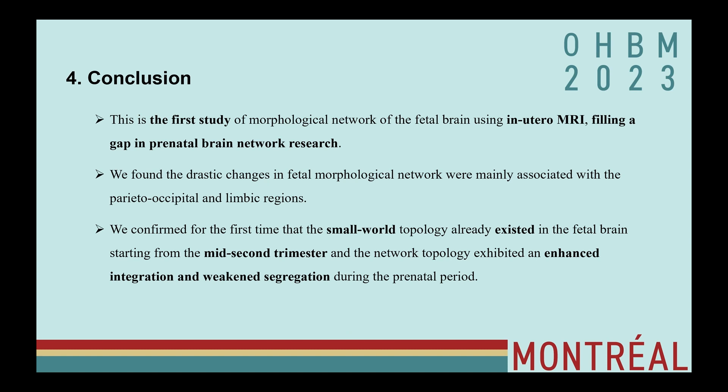In conclusion, this is the first study of the morphological network of the fetal brain using in utero MRI, filling a gap in prenatal brain network research. We found that the drastic changes in fetal morphological network were mainly associated with the parieto-occipital and limbic regions. More importantly, we confirmed for the first time that small-world topology already existed in the fetal brain starting from the mid-second trimester, and the network topology exhibited enhanced integration and weakened segregation during the prenatal period.